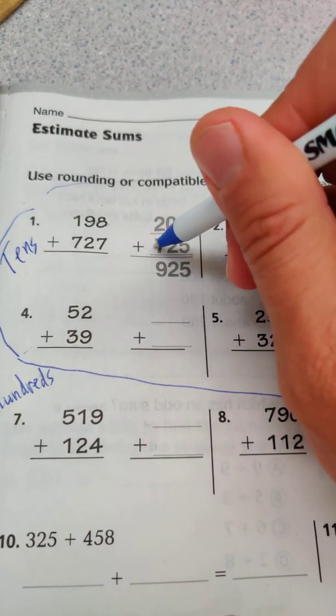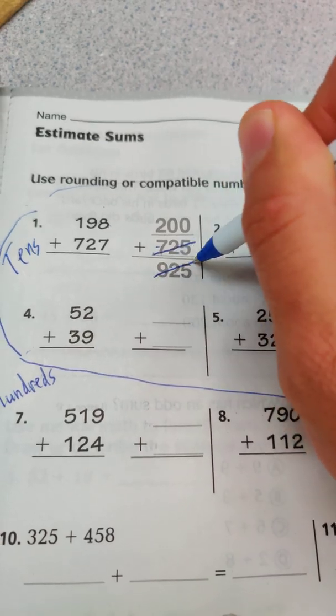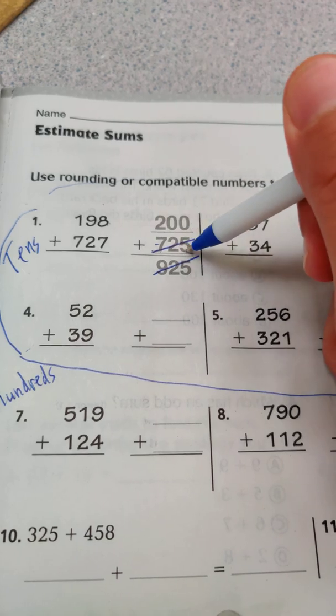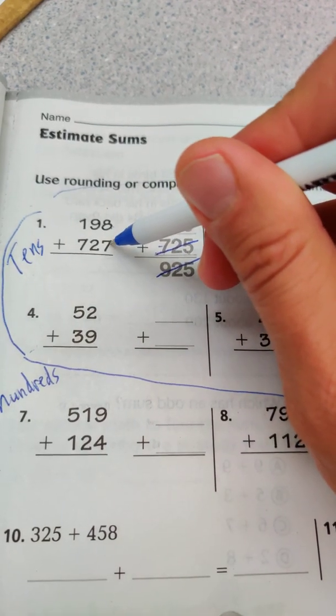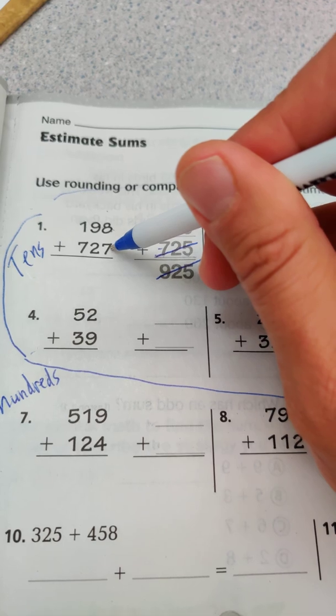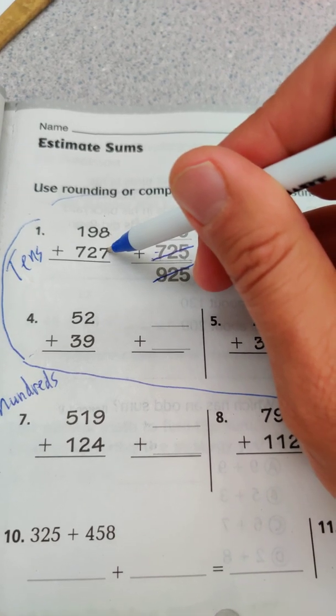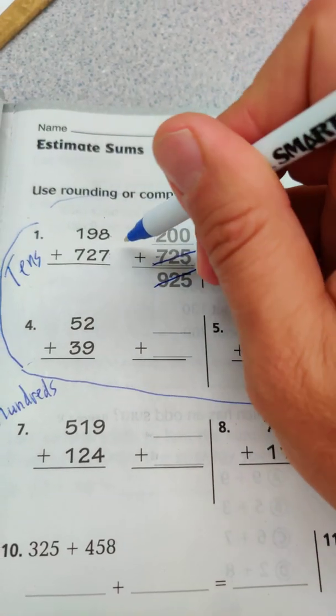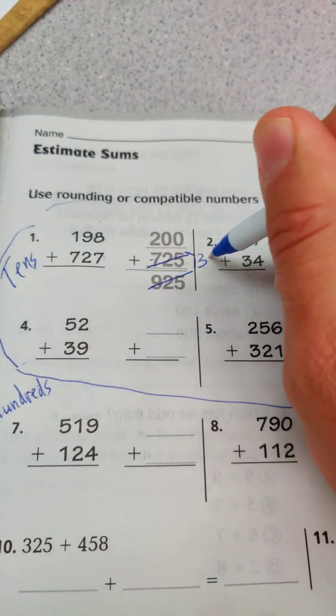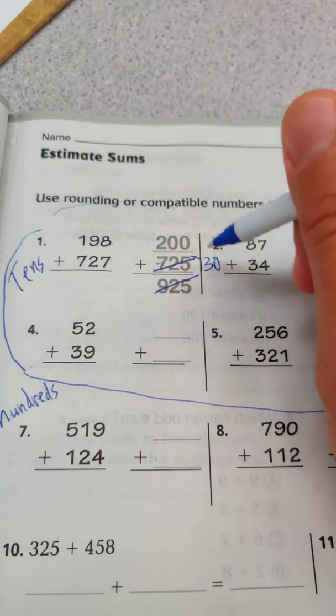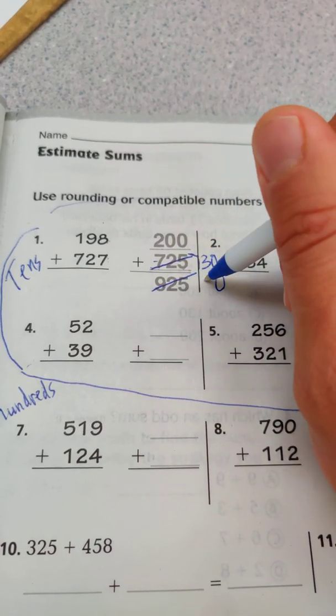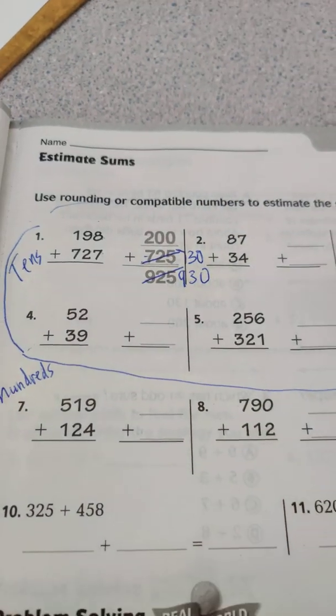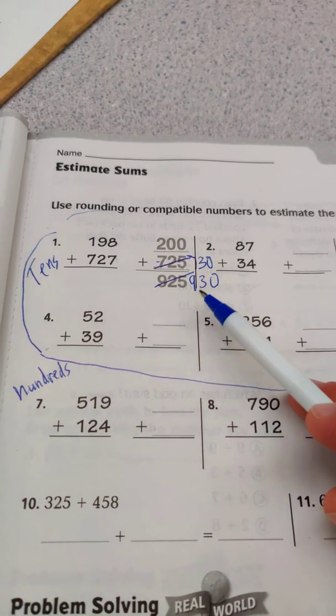This will stay 200. For the second number, instead of 725, we're rounding to the nearest 10. Looking at the ones, it's five, so we round the tens digit up. Instead of 727, it becomes 730. Zero plus zero, zero plus three, and seven plus two gives us 930, which is very close to the compatible number strategy.